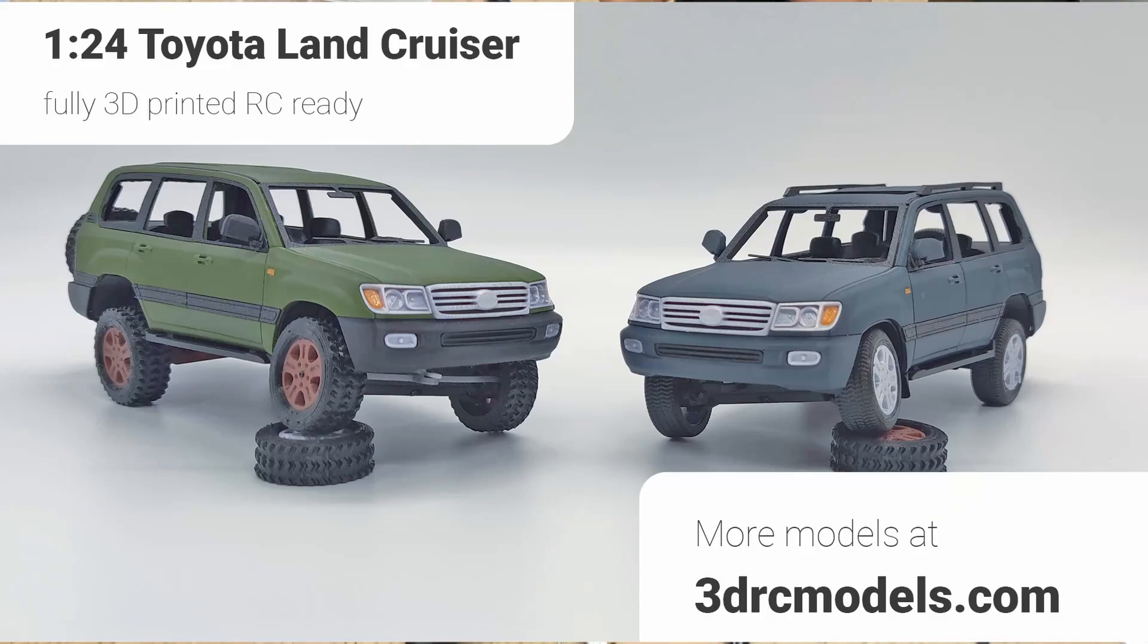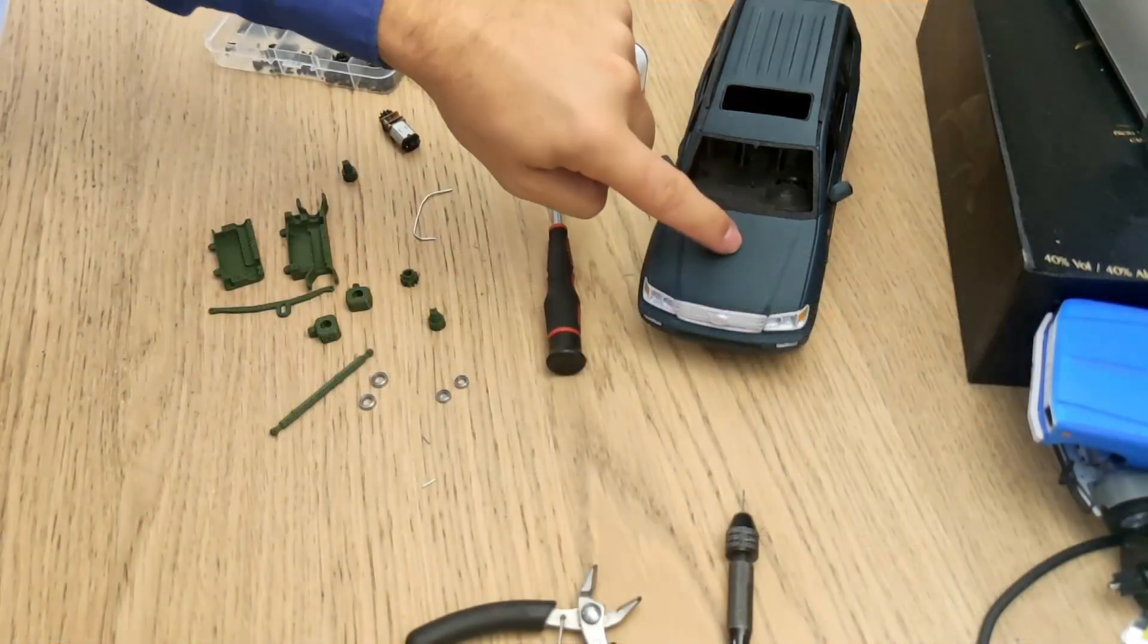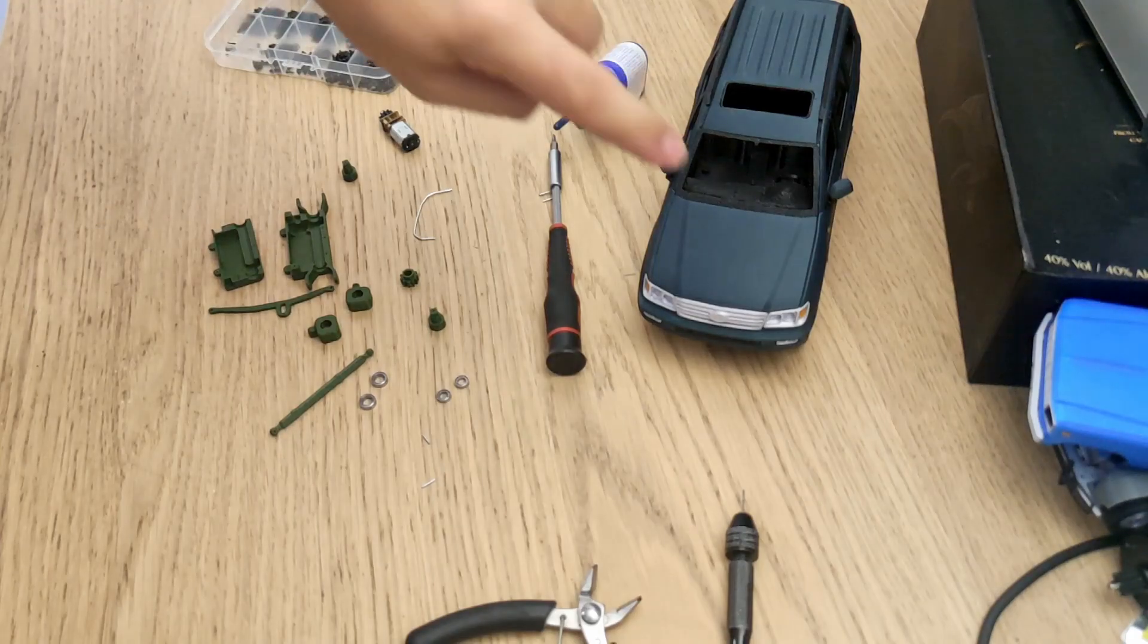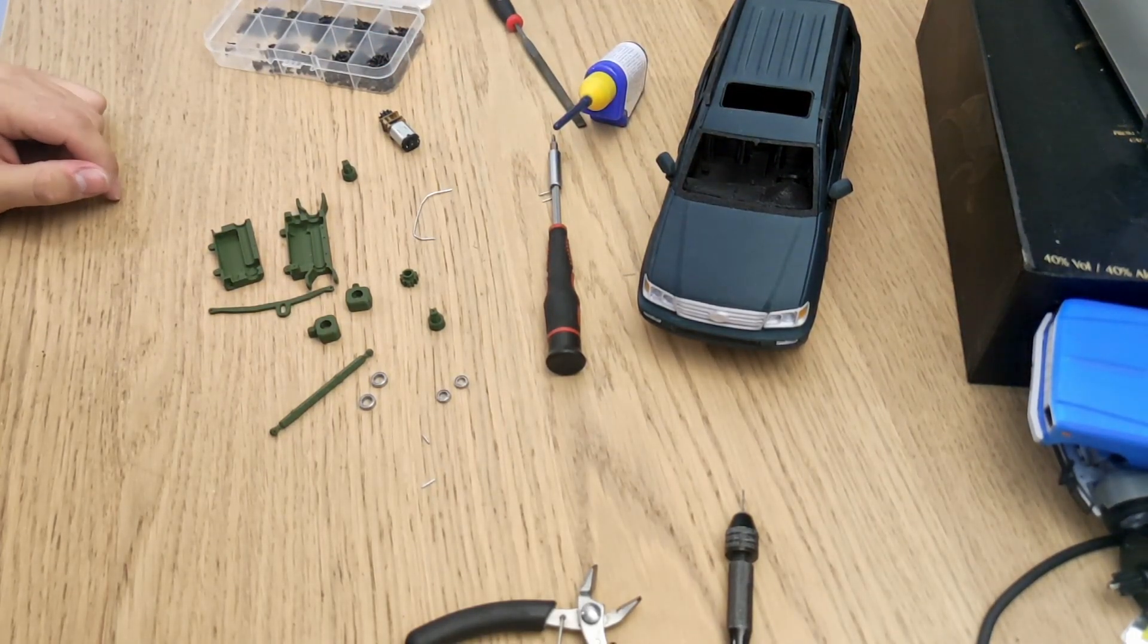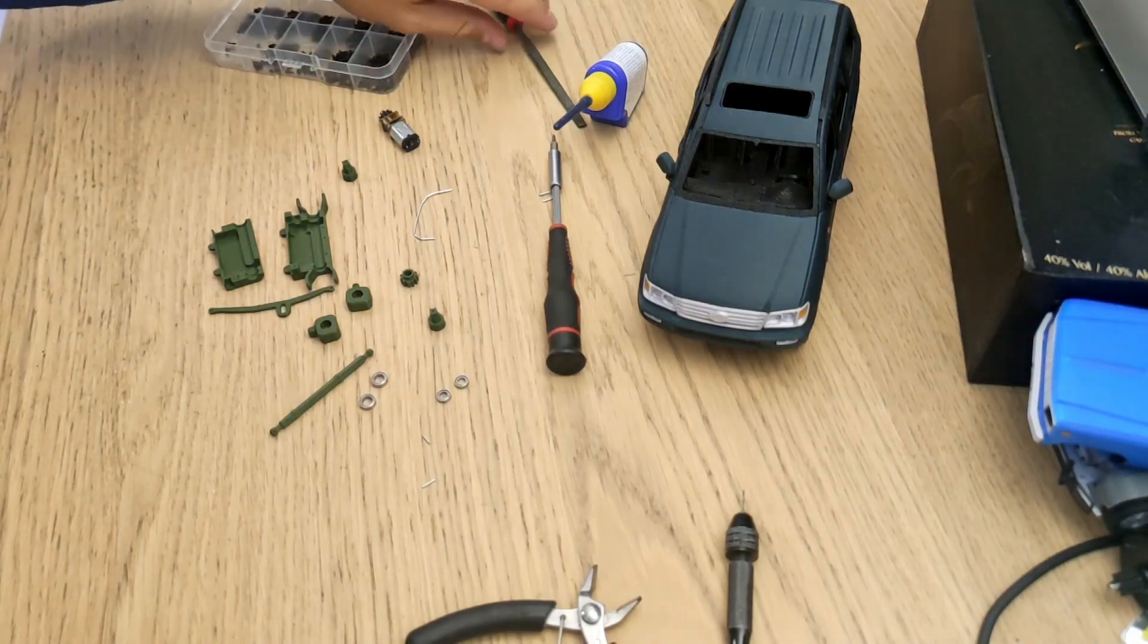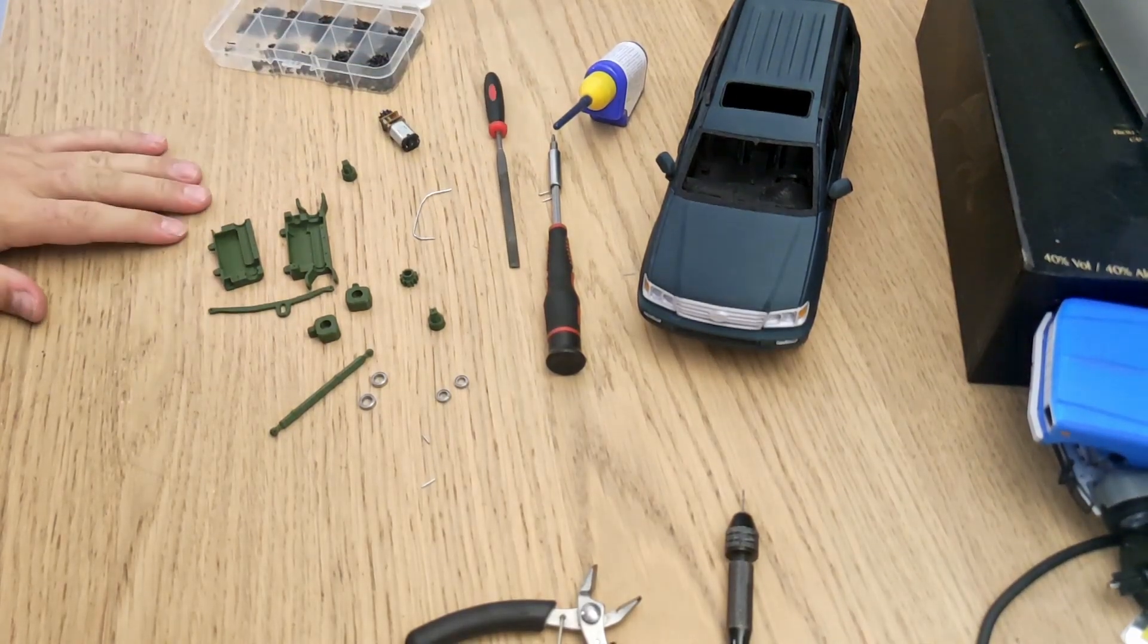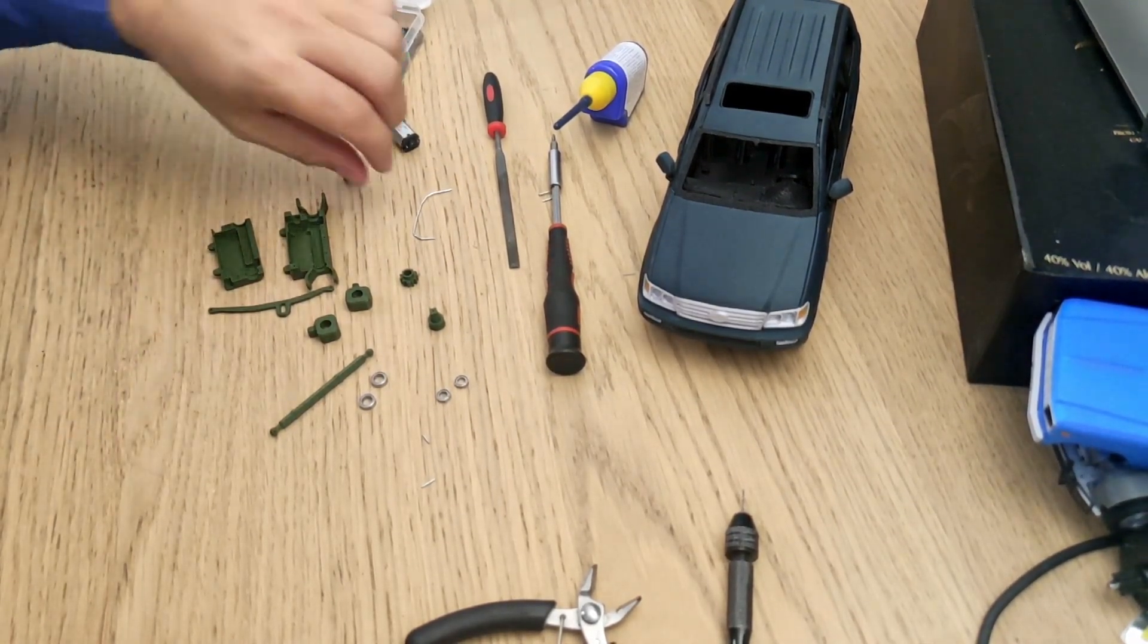Hello everyone, this is a short video about making the front axle for the Toyota Land Cruiser or probably for most of my cars that have front wheel drive. What we need, all we need is here. We have some tools, we have some printed parts, some bearings and a paperclip.